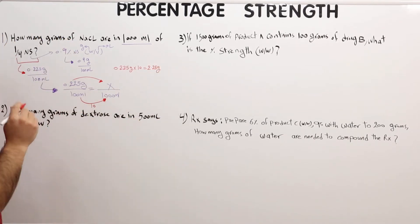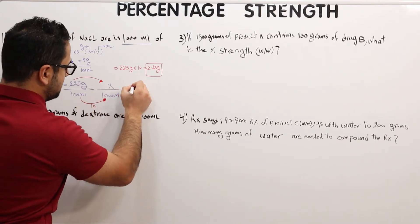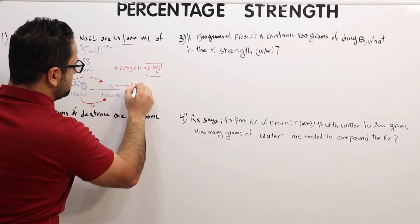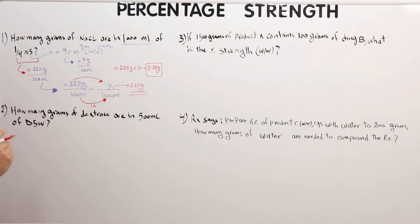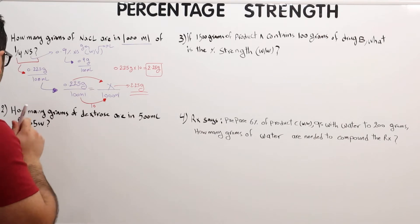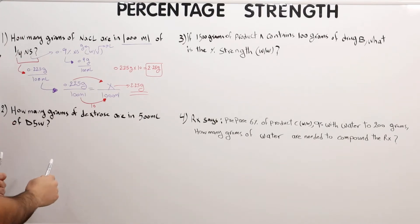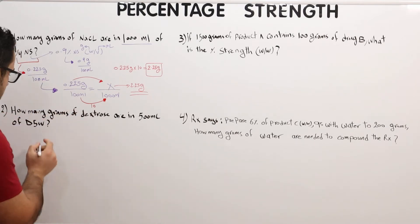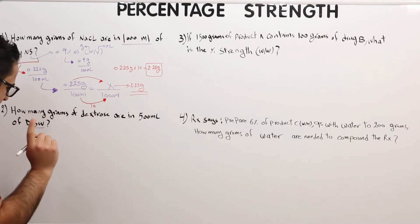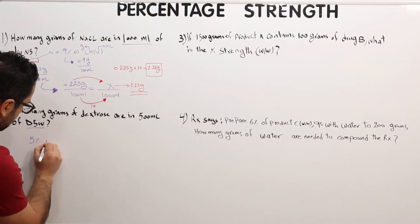That gives us 2.25 grams — and that's the answer to question one. Now moving to question number two: how many grams of dextrose are in 500 ml of D5W? D5W is basically 5% dextrose in water.